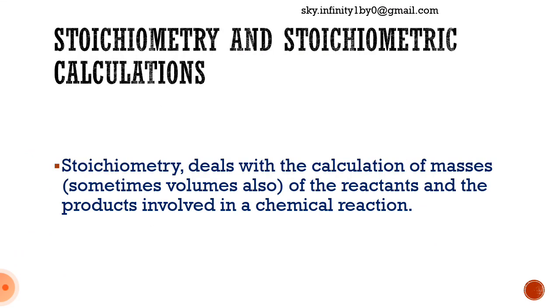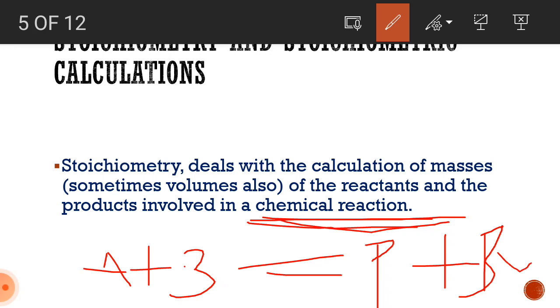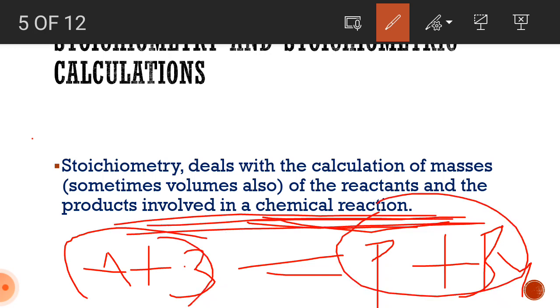Now, let's move on to the stoichiometry and the stoichiometric calculations. Basically, stoichiometry deals with the calculation of masses and also volumes of the reactants and the products involved in a chemical reaction. So, whenever there is a chemical reaction taking place between two reactants to give products and a by-product, we use stoichiometry in order to calculate the masses of these reactants and the products which are undergoing a chemical reaction.